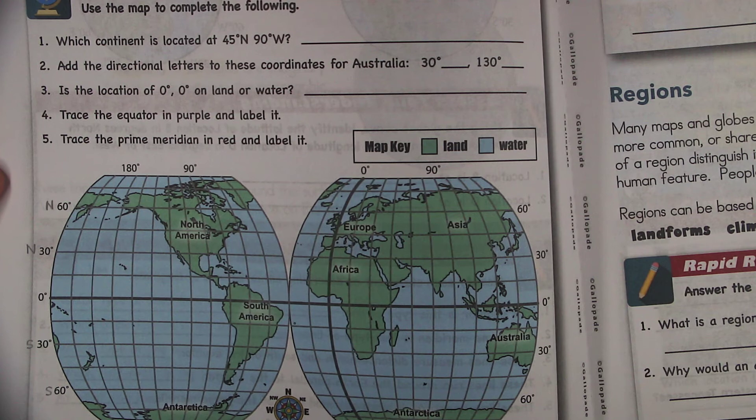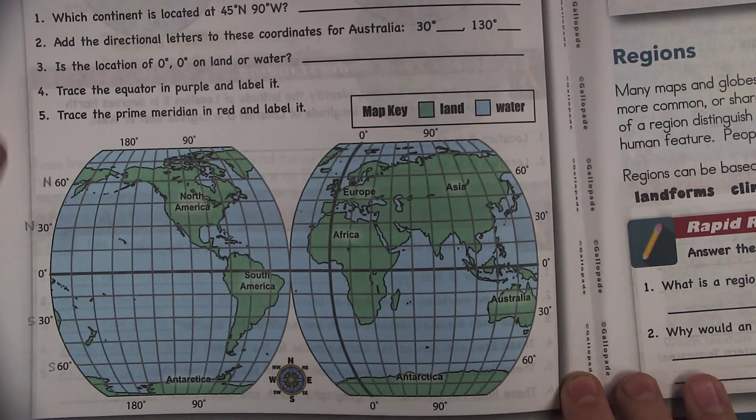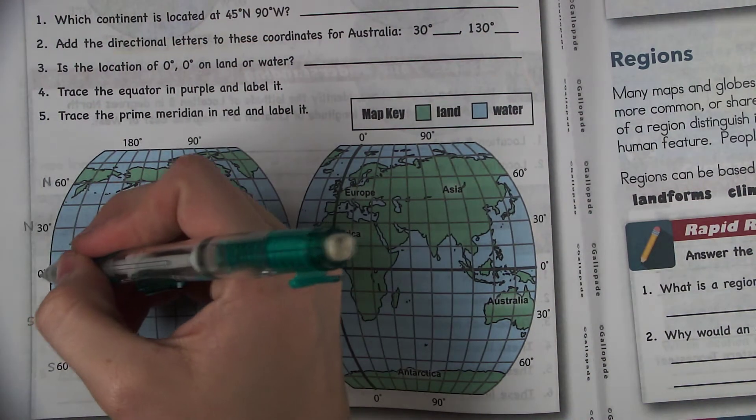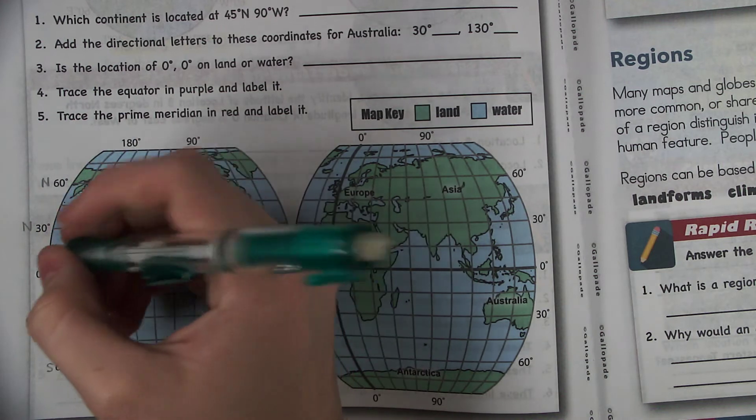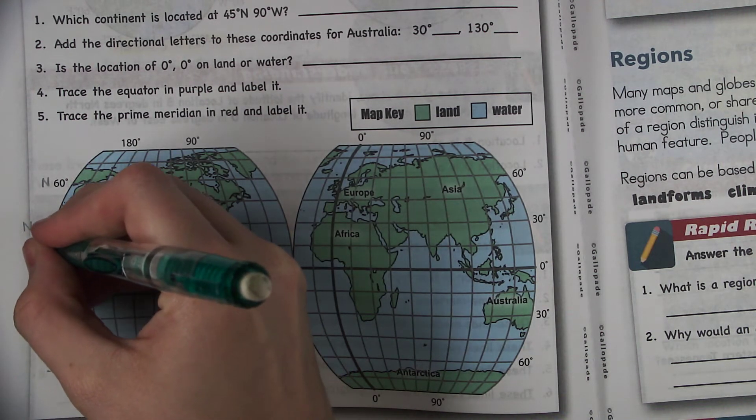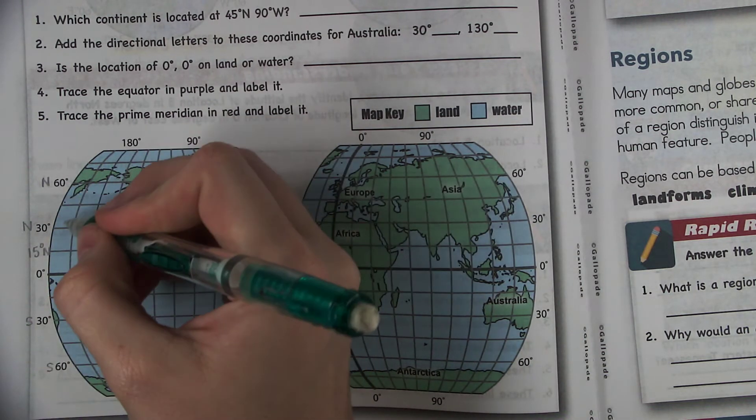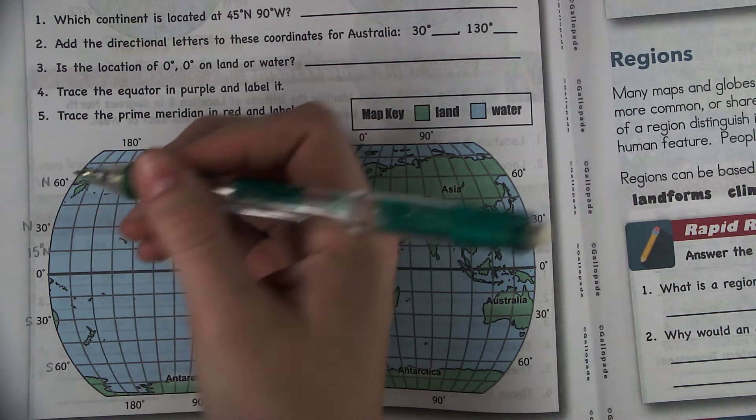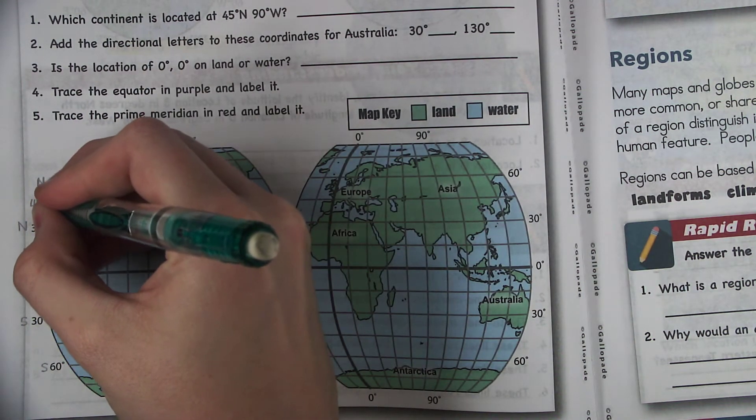Now what about the lines in the middle? Well this is where you have to do a little bit of math. So to do the math you say what is halfway between 0 and 30? Well halfway between 0 and 30 would be 15. So right here would be 15 degrees north. This would also be 15 degrees south. And then between 30 and 60 would be 45 degrees north.